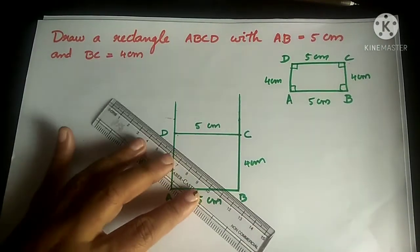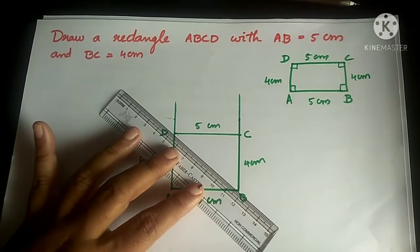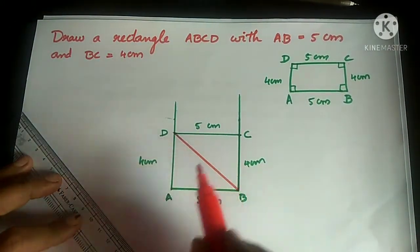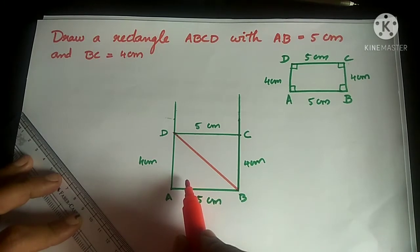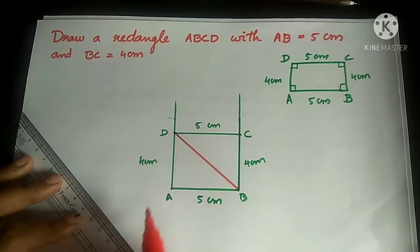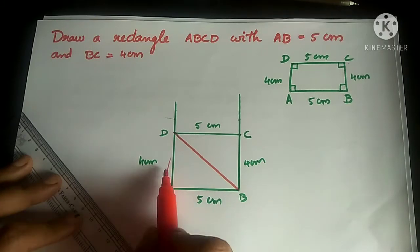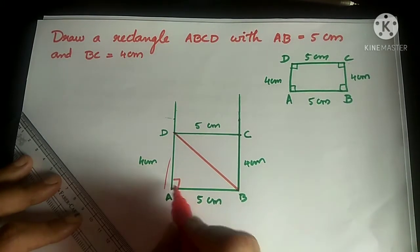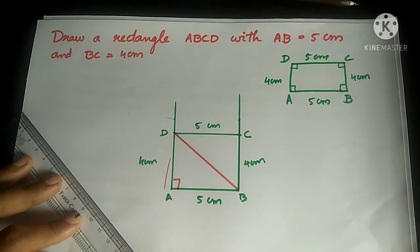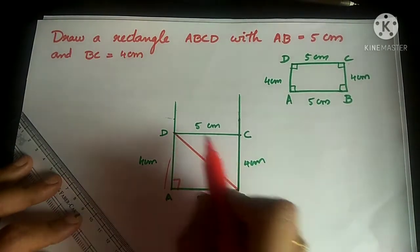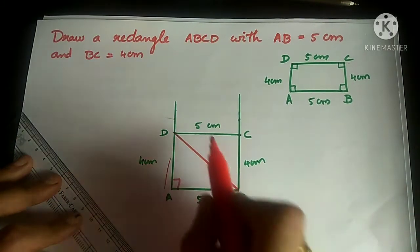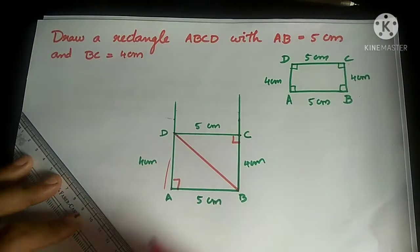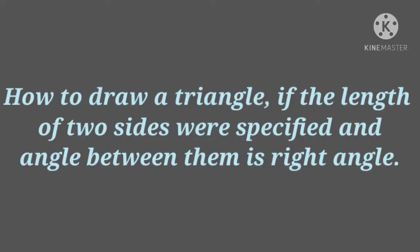Now see children, when we draw a diagonal of this rectangle, we get 2 triangles. One triangle has perpendicular sides of 4 cm and 5 cm with the angle between them being 90 degrees. The other triangle also has perpendicular sides of 5 cm and 4 cm with the angle between them being 90 degrees.